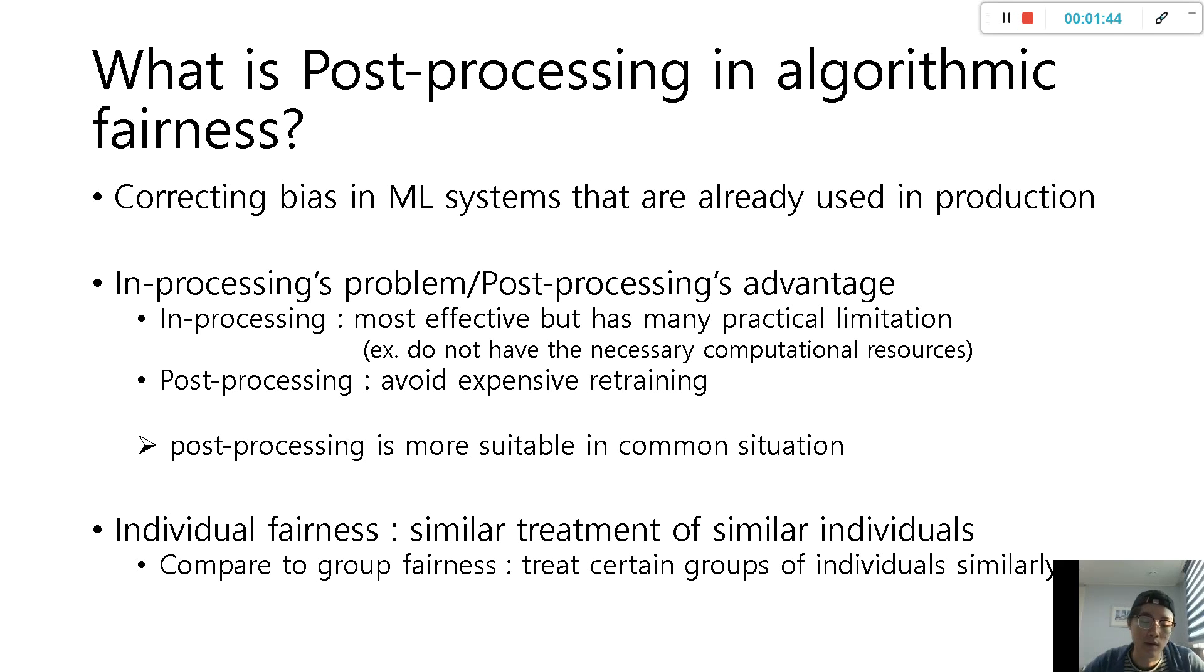So post-processing is most suitable in common situations because of time and resource constraints. Next, individual fairness can be said as similar treatment of similar individuals. There is other fairness called group fairness that treats certain groups of individuals similarly, but this paper uses individual fairness because there is already a lot of research using group fairness.